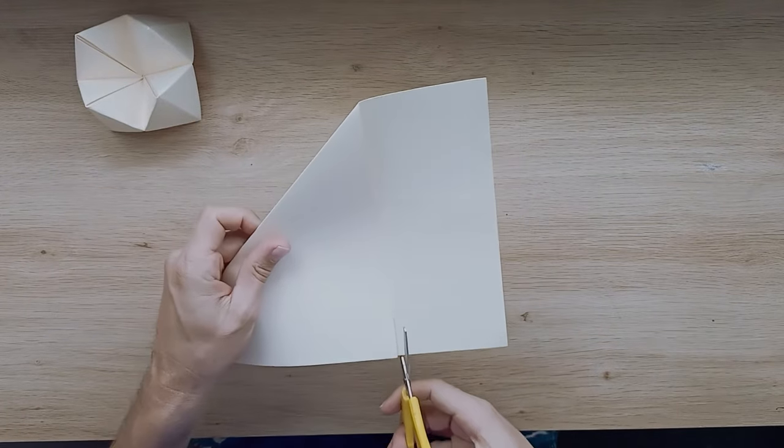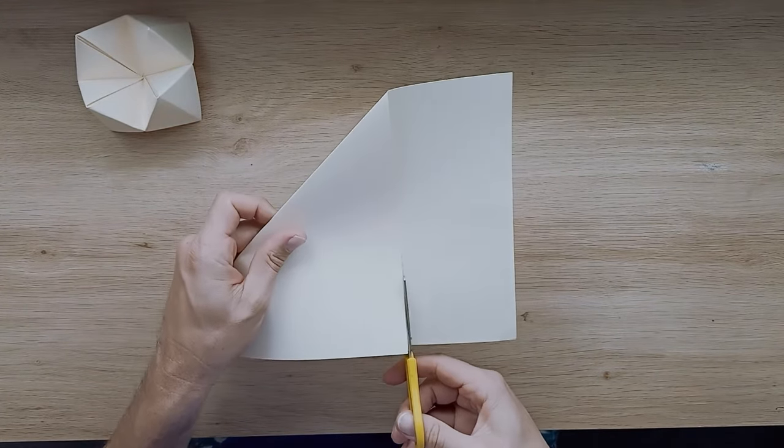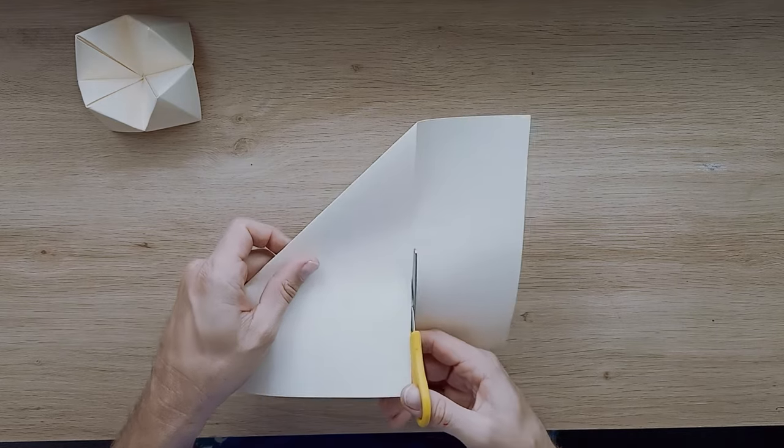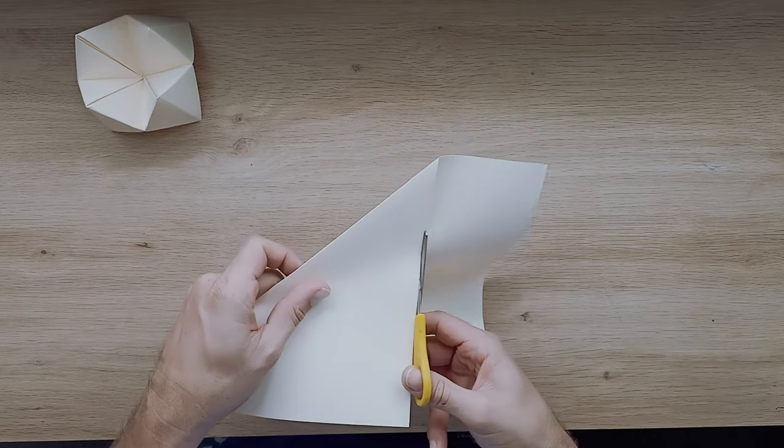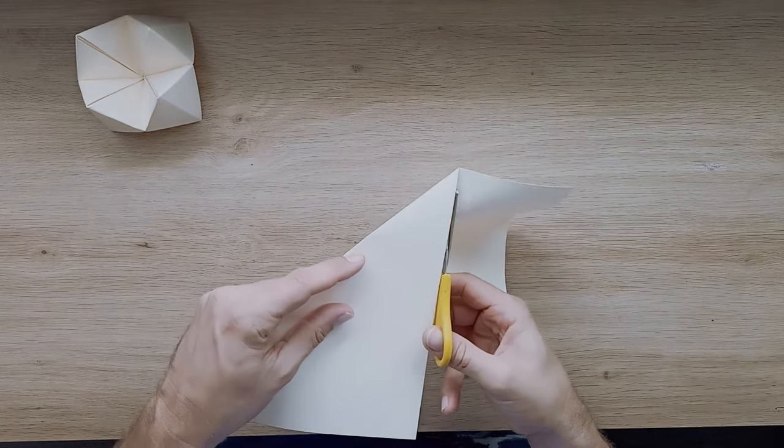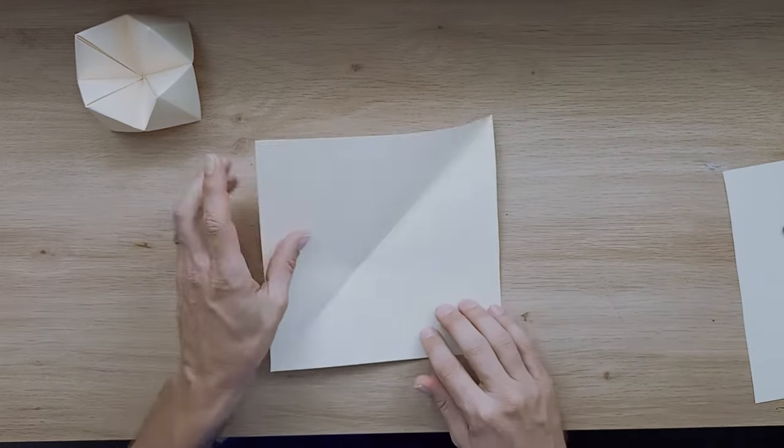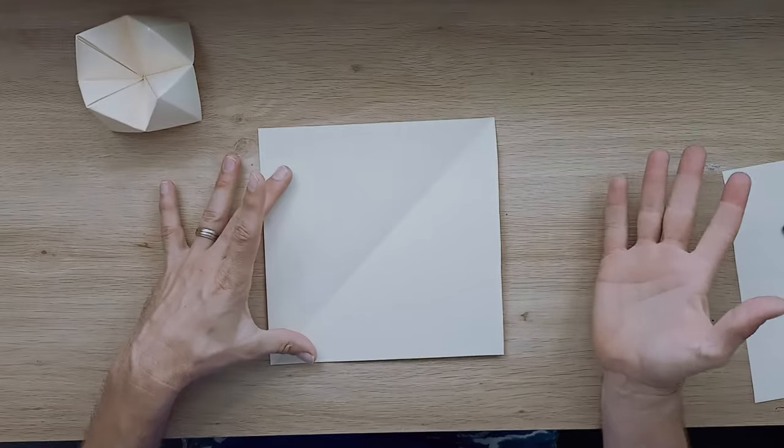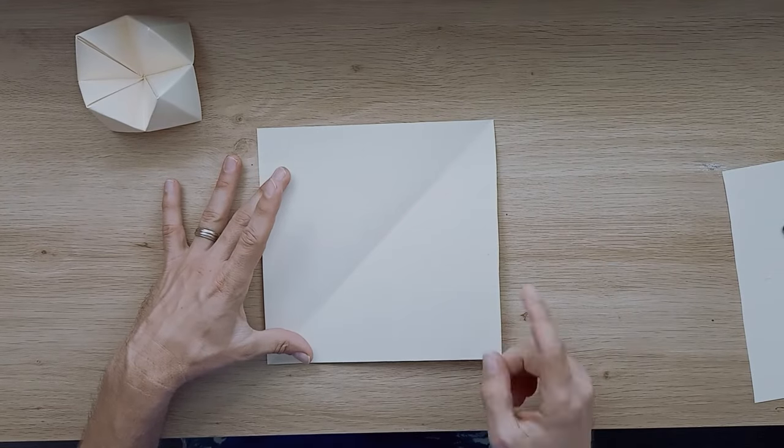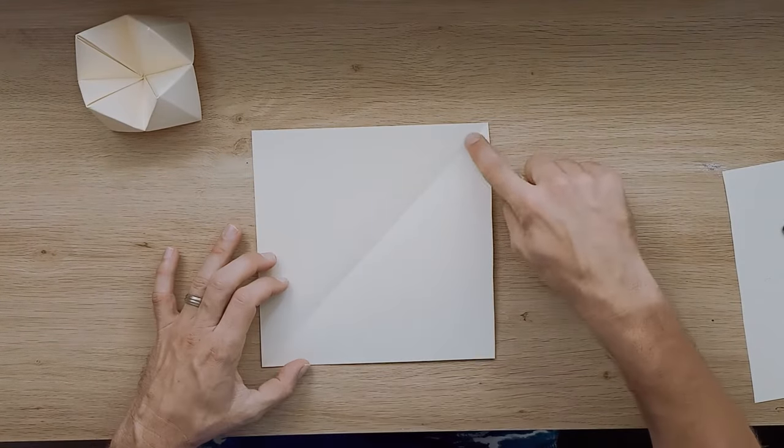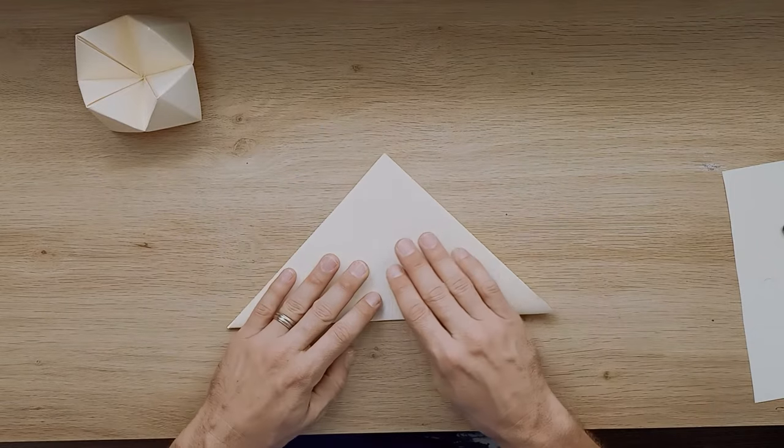So I'm going to cut along that line now and I can get rid of that little bit of paper there. Open it up and I have my perfect square piece of paper. Not only that, my first fold is actually done for me and that was a diagonal fold.